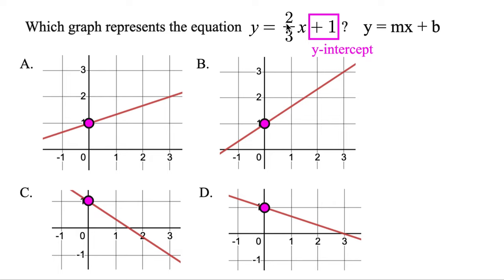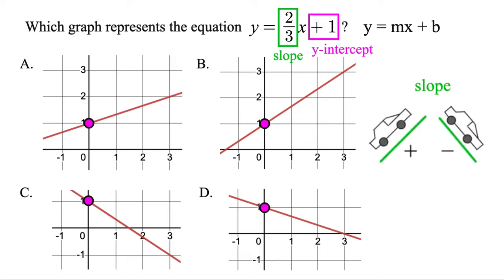Next, you're going to look at the number in front of x, and that's called the slope. A slope could be positive or negative. Just imagine you're driving from left to right — if you go uphill, that's a positive slope, and downhill is a negative slope.